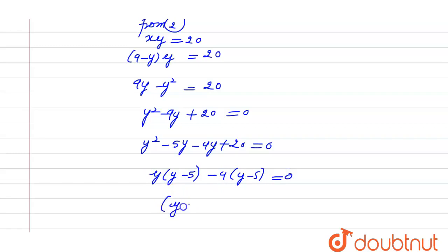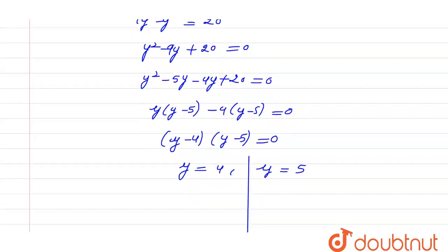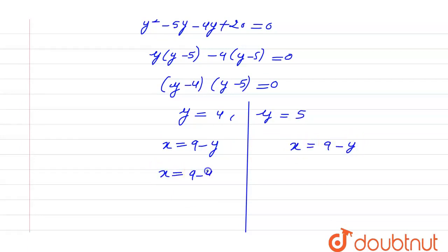So the value of y is y is equal to 4 and y is equal to 5. So now we will calculate the value of x from here. So the value of x is equal to 9 minus 4, which is equal to 5. x is equal to 9 minus 5, so x is equal to 4 from here. So we need to calculate the sum of their cubes.